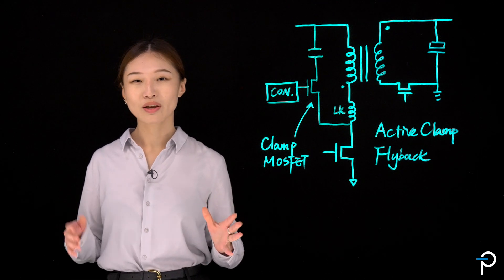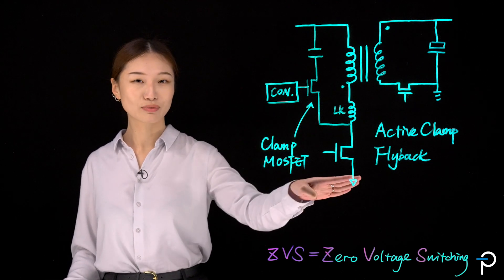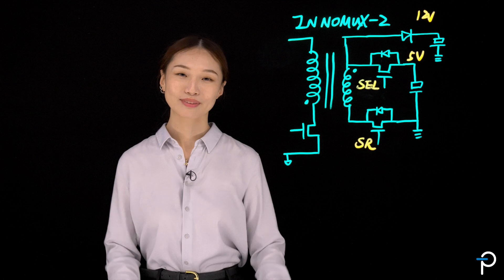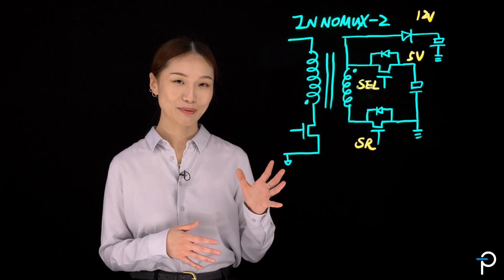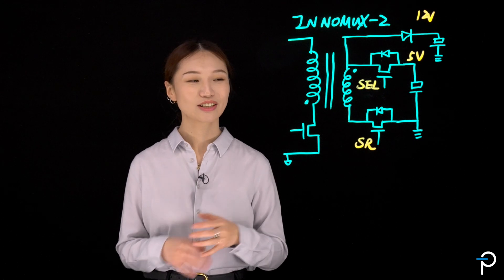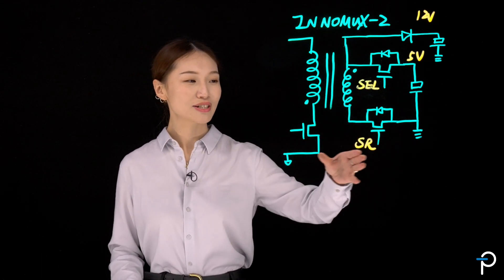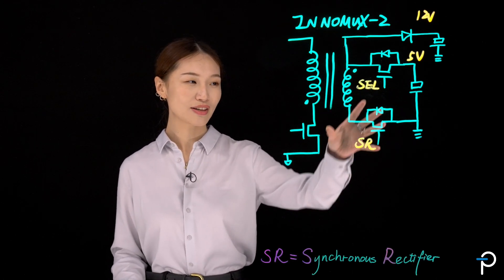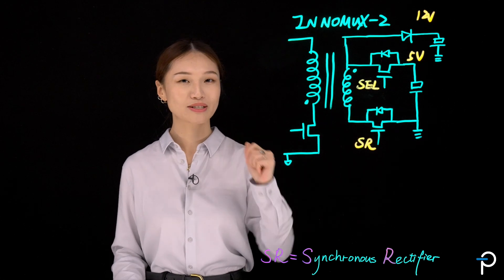But now we have a new way of achieving zero voltage switching with no additional circuitry. Here I have the schematic of Inomax 2, where zero voltage switching can be achieved with no additional circuitry. We simply just leverage the existing synchronous rectifier, the SR MOSFET here, to accomplish that feature.